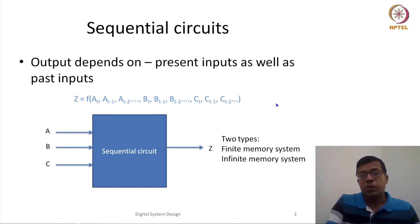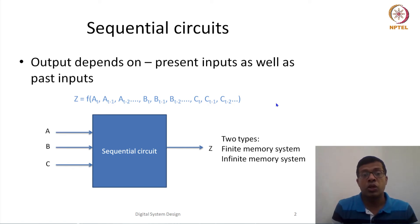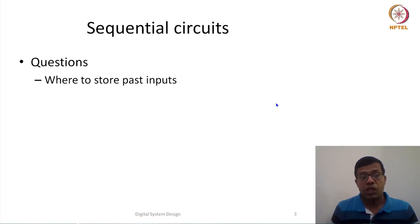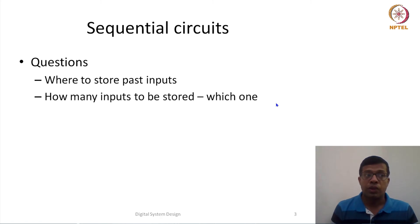This raises certain questions in our mind: if a sequential system responds to previous inputs as well as the current input, where do we store all these past inputs? And how many past inputs should we store? Which ones should we keep?